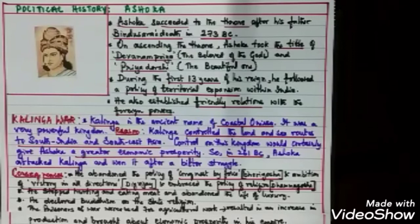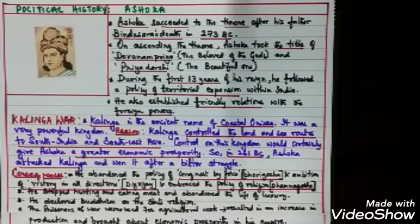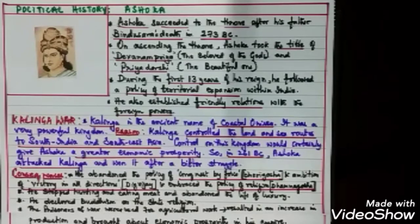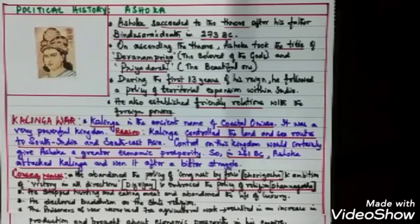Even today we have failed to bring about disarmament, yet Ashoka, in the fourth century BC, after abandoning weapons, followed a disarmament policy and made others do the same. He successfully maintained international relationships and spread Buddhism. He was the most secular ruler of his period — during his rule, Buddhism, Jainism, and Hinduism all coexisted, and he maintained religious affairs as well as the administration most successfully.